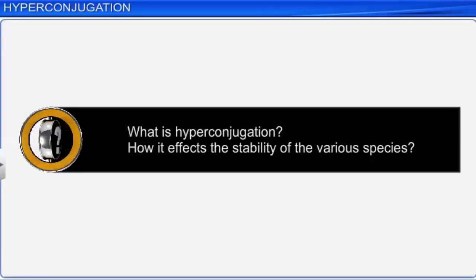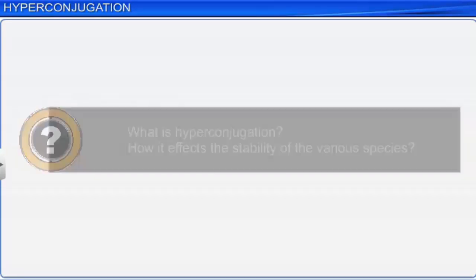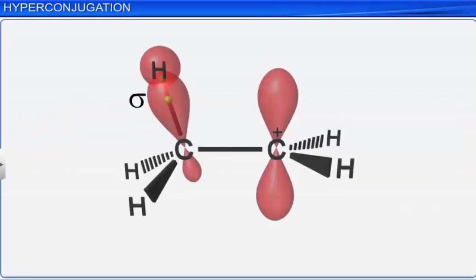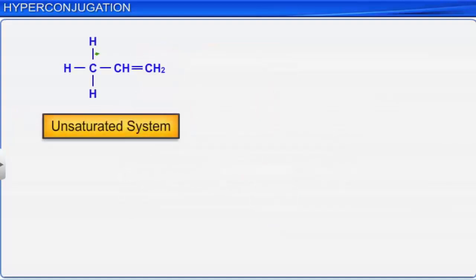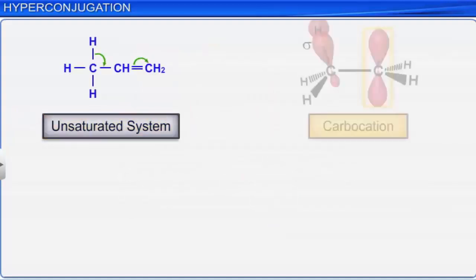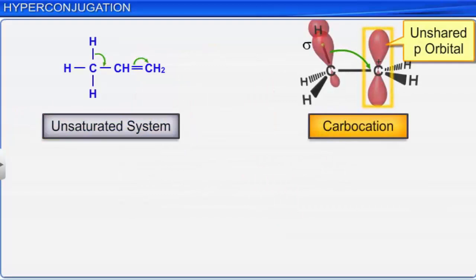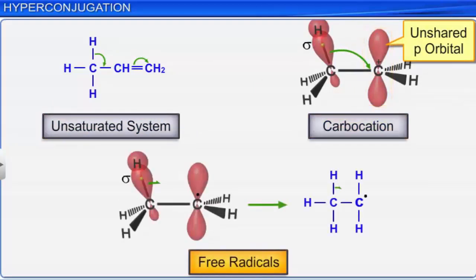Let's learn what hyperconjugation is and how it affects the stability of various species. A general stabilizing interaction which involves the delocalization of sigma electrons of a C-H bond of an alkyl group directly attached to an unsaturated system or to a species with an unshared p orbital, such as carbocations or free radicals, is known as hyperconjugation.